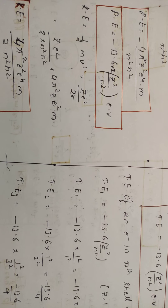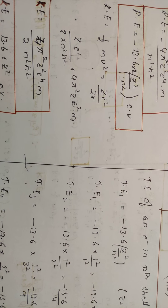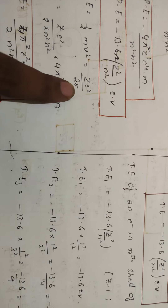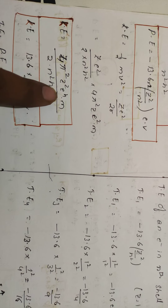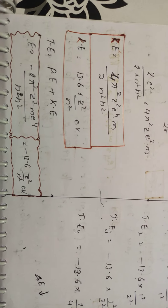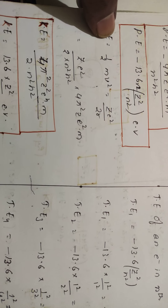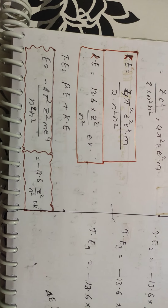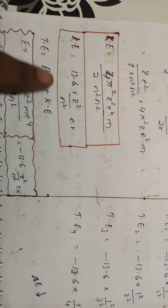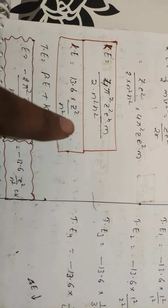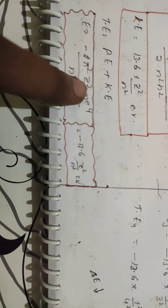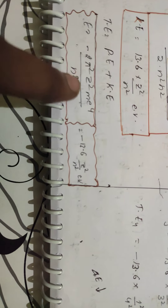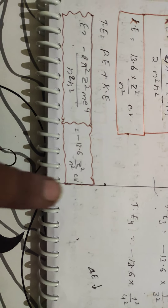Kinetic energy equals half mv², which equals ZE²/2R. Substituting r = n²h²/4π²Z²me⁴ into the denominator, kinetic energy becomes 4π²Z²e⁴m / 2n²h². If you substitute all the constant values, kinetic energy equals 13.6 × Z²/n² electron volts. And total energy equals potential energy plus kinetic energy, giving minus 2π²Z²me⁴/n²h². Substituting all values, total energy equals minus 13.6 Z²/n² electron volts.